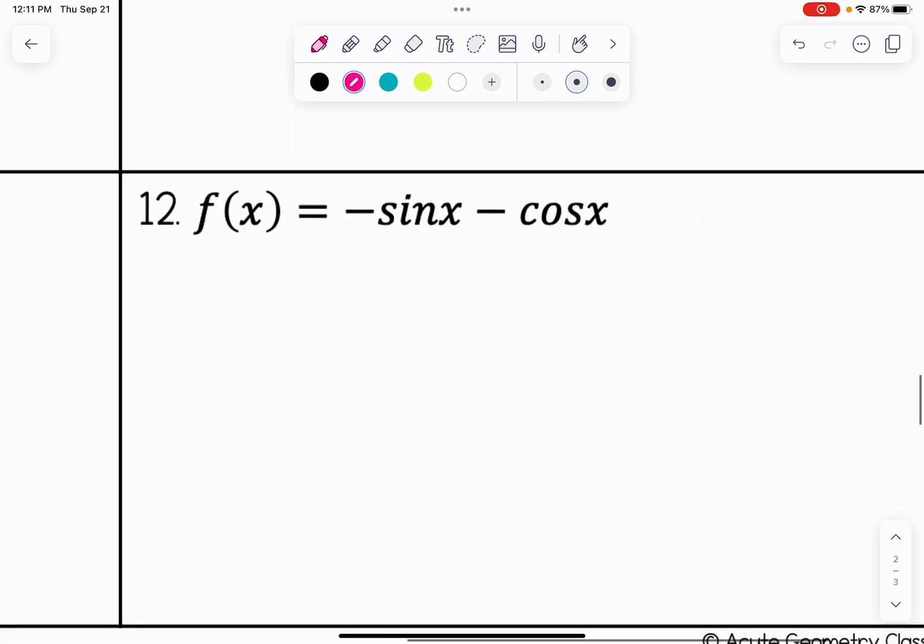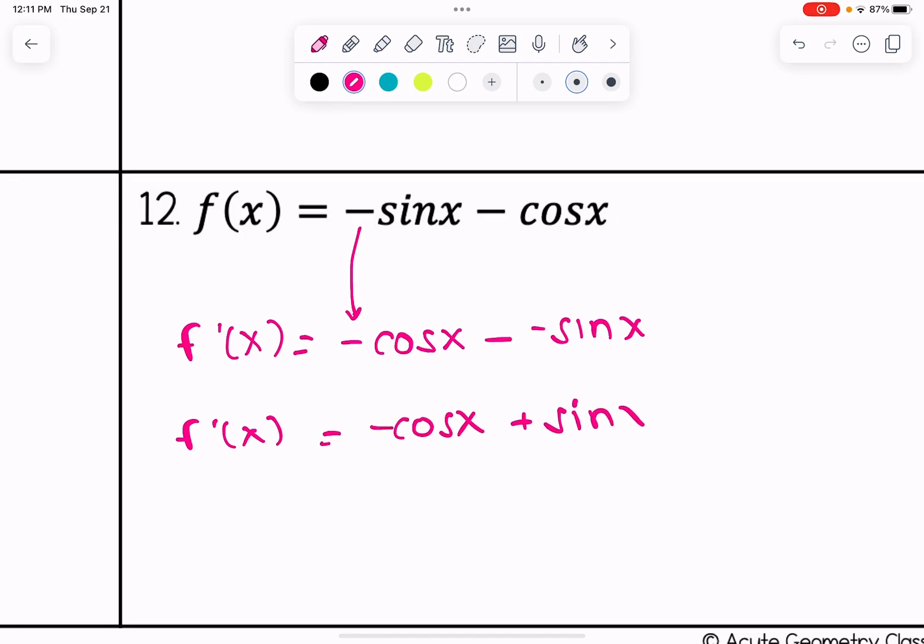And for our last one here, the derivative of negative sine x minus cosine x. I'm going to copy this negative over. The derivative of sine is cosine. I'm going to copy that minus. The derivative of cosine is negative sine. And then let's just clean this up a little bit. So I have negative cosine x plus sine x as our derivative.